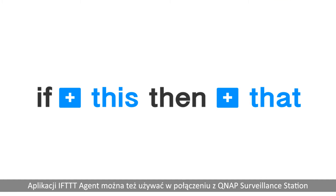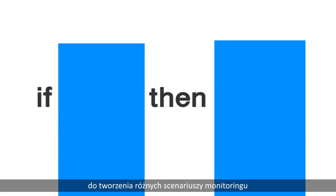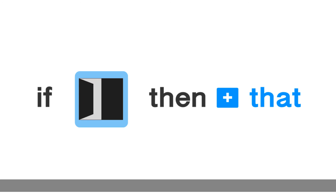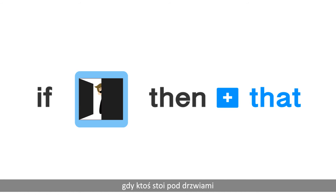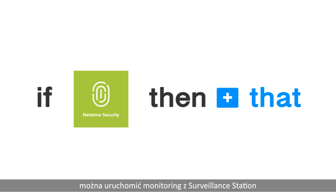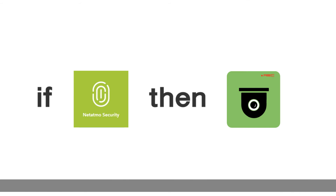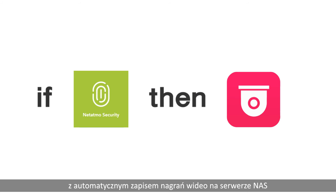You can also use QNAP Surveillance Station with IFTTT agent to create several surveillance scenarios, such as when you leave home, when someone is at the door, or when any motion is detected — then start Surveillance Station to monitor and automatically save recorded videos to the NAS.